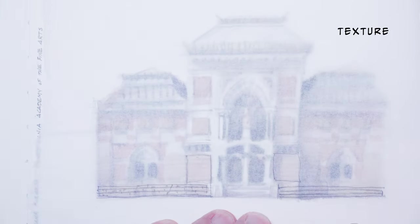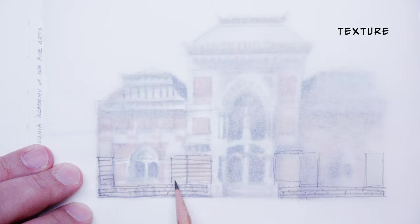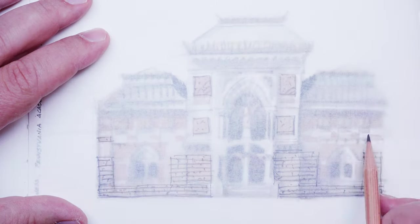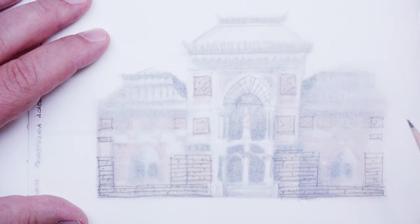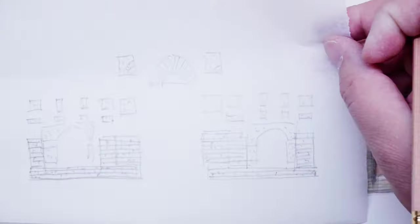Texture. Texture is the surface characteristics of an object. This can be smooth to rough. It is often a three-dimensional pattern of an object.